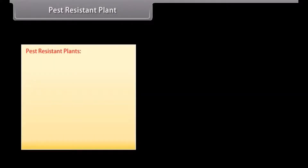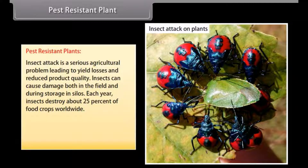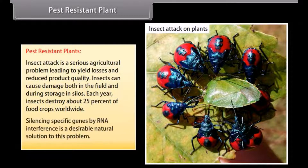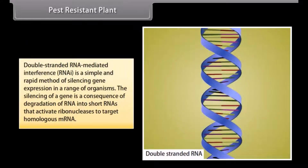Pest-resistant plants: Insect attack is a serious agricultural problem leading to yield losses and reduced product quality. Insects can cause damage both in the field and during storage in silos. Each year, insects destroy about 25% of food crops worldwide. Silencing specific genes by RNA interference is a desirable natural solution to this problem.